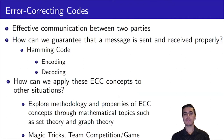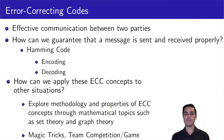Hamming codes, a type of error correcting code, first encode a message by adding parity bits to secure it. After the transmission process, Hamming codes go through a decoding process which is responsible for detecting and correcting up to one bit of error.